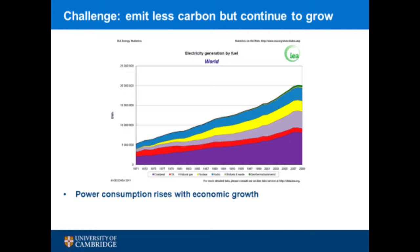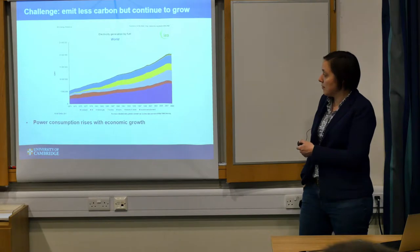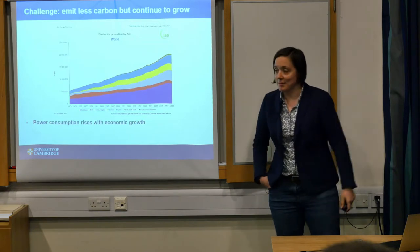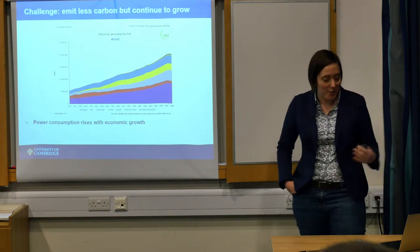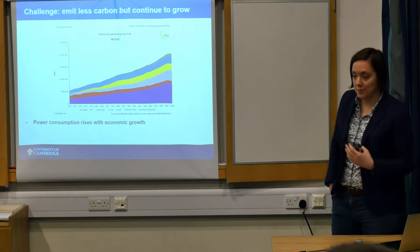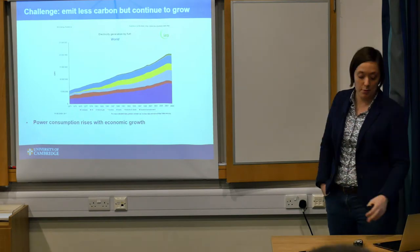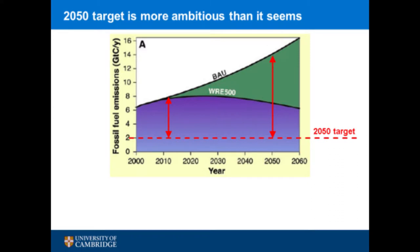This is gigawatt hours of energy consumption against time. As the economy grew up to 2009, carbon emissions have grown. And then here, this is the credit crunch in 2008, and that's the only time we've managed to drop our emissions. So that context of power consumption being basically proportional to economic growth puts the 2050 target of going down to 20% of our 2010 emissions makes it even harder.